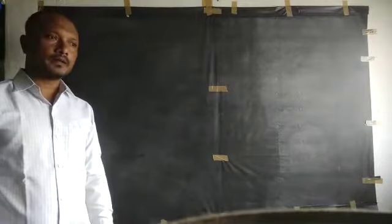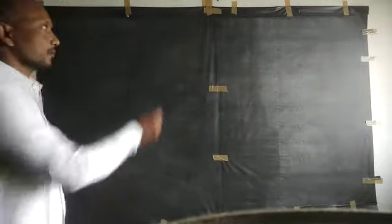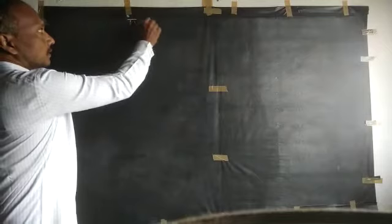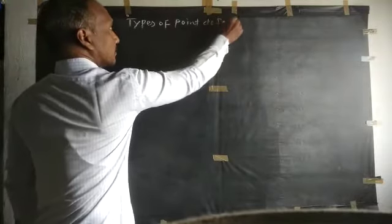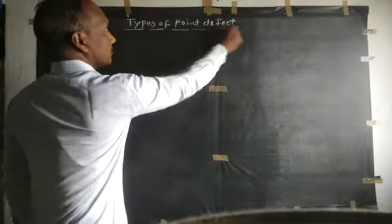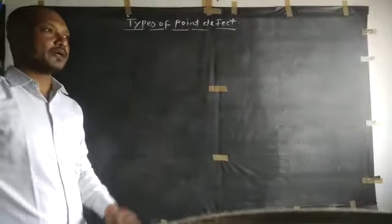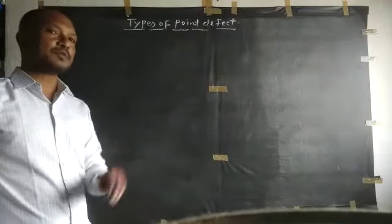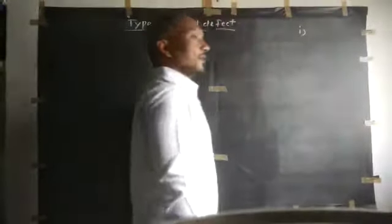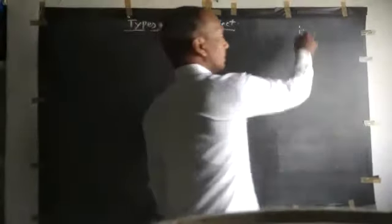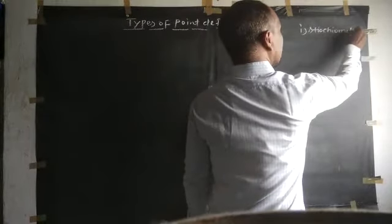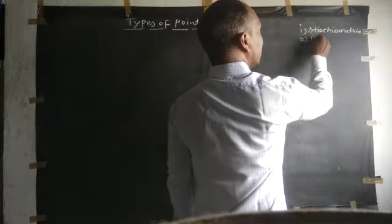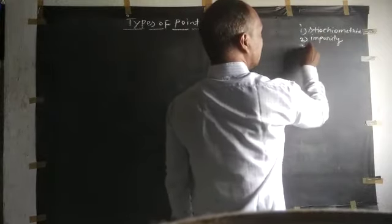Good morning students. I am going to talk about point defects. As I told you, there are four types of point defects. The major three types are: the first is stoichiometric, second is impurity, and third is non-stoichiometric.